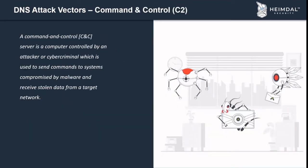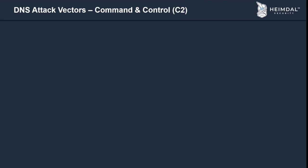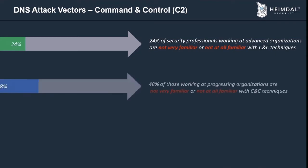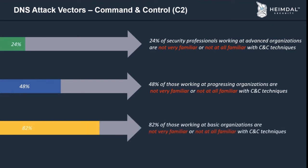A command-and-control (C2) server is a computer controlled by an attacker or cybercriminal used to send commands to systems compromised by malware and receive stolen data from a target network. C2 servers act as command centers that malware uses to store stolen data or download commands. Establishing C2 communication is a vital step for attackers to move laterally inside a network. Research shows that 24% of professionals at advanced organizations, 48% at progressing organizations, and 82% at basic organizations are not familiar with C2 communication techniques.